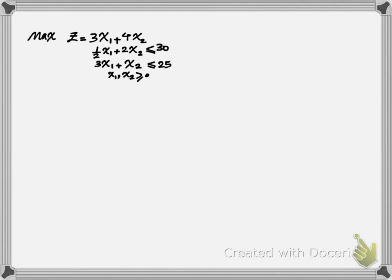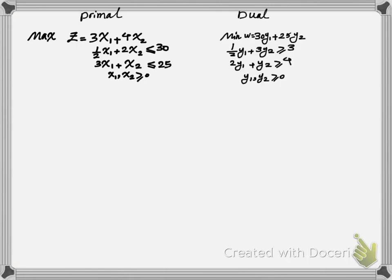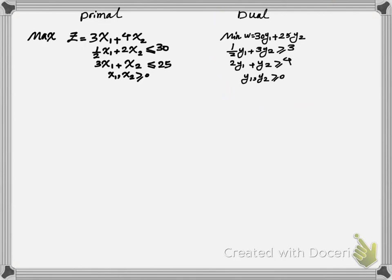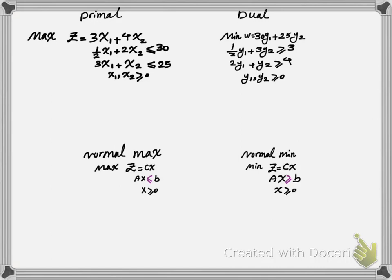In the previous video we showed how the relationship between dual and primal problem works. We saw that for a primal problem shown on the screen, your dual programming is going to be on the right hand side. In this video we are focused on writing this dual programming without going through those intermediate steps discussed earlier. The first step is to be familiar with the definition of normal maximization problem and normal minimization problem.